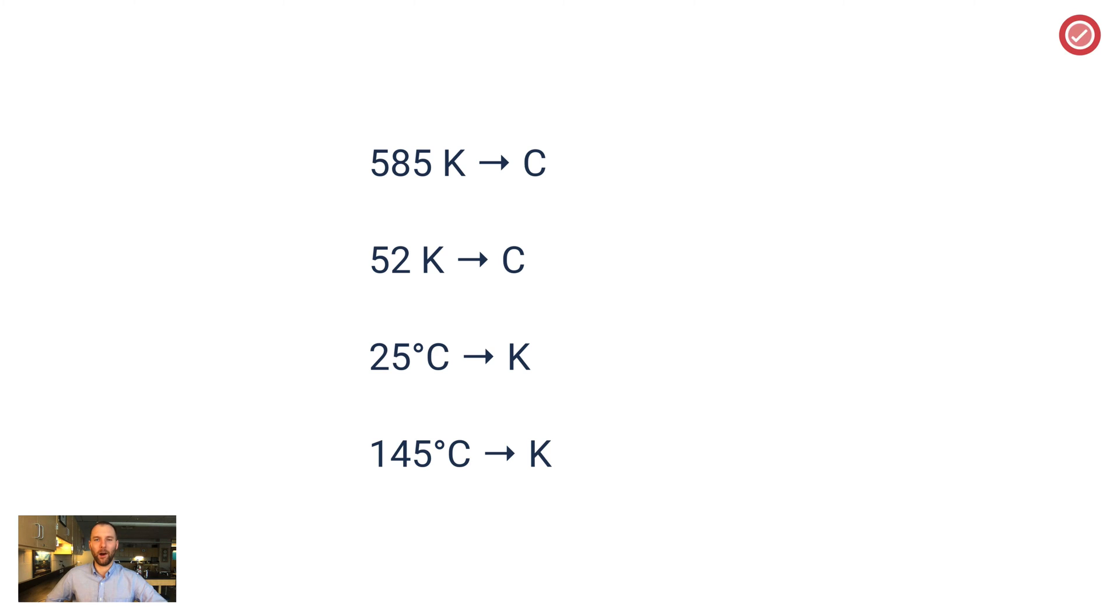Pause the video now. Try these on your own and then I'll show you the answers in just a second. 585 Kelvins is equal to 312 degrees Celsius. I just simply subtract 273. If I'm given a Kelvin value, subtract 273 and that gives you the Celsius version. Same thing here, 52 Kelvins. Subtract away 273 and that should give you negative 221.